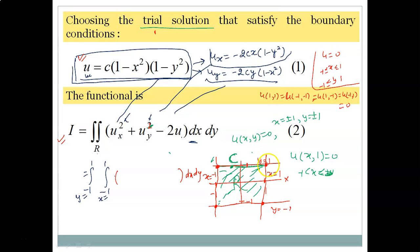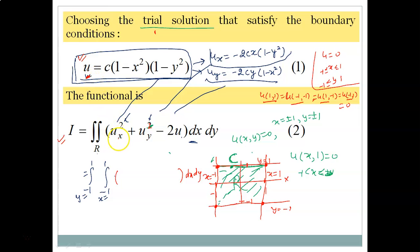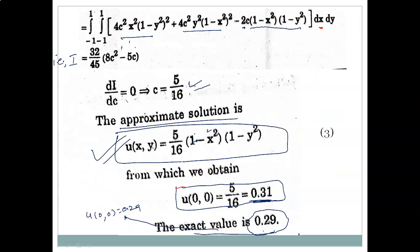We now assume a trial solution u such that the boundary conditions are satisfied. At the corner points — (1,1), (1,−1), (−1,−1), (−1,1) — the value of u must be zero. An appropriate trial solution is: u = c(1 − x²)(1 − y²). We can verify that all boundary conditions are satisfied with this choice. We then compute u_x and u_y and substitute them along with u into the functional integral with limits −1 to 1.